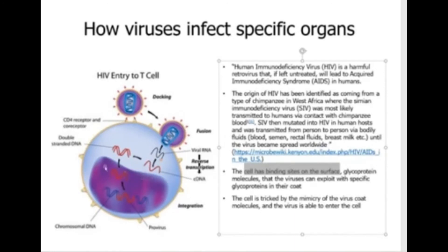Once the RNA reaches the cytoplasm — the region between the cell membrane and the nucleus — the virus uses an enzyme to make a DNA copy from the viral RNA. This viral DNA then gets into the nucleus and incorporates itself into the human DNA. Whenever the human DNA is replicated or transcribed to direct protein synthesis, the cell makes proteins directed by the viral genetic material. The cell essentially becomes a little machine for the virus to produce more viruses.